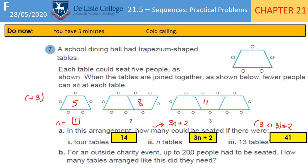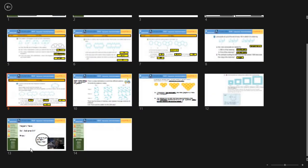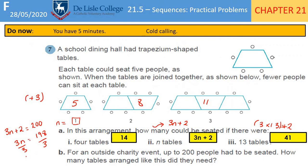For an outside charity event, up to 200 people had to be seated — how many tables arranged like this did they need? It says 'up to 200', so we use an equals sign: 3n + 2 = 200. Subtract 2 from each side, then divide both sides by 3. You get n = 66, so they need 66 tables.